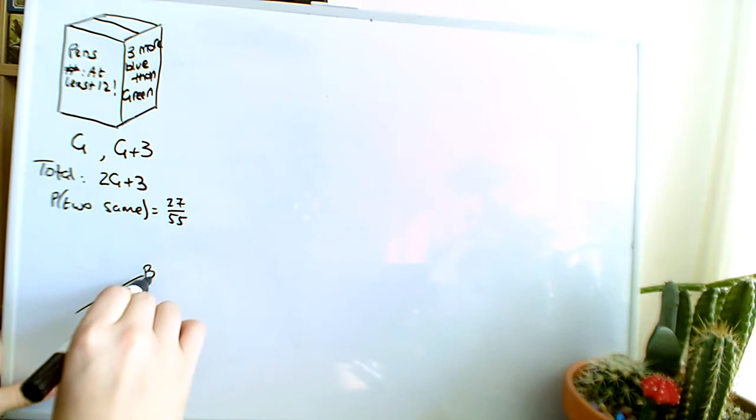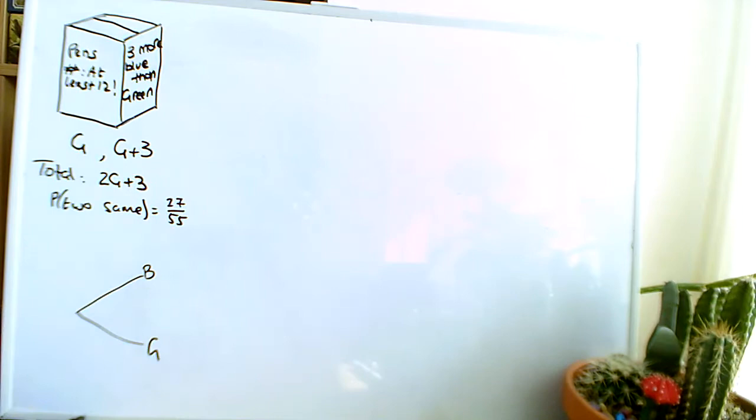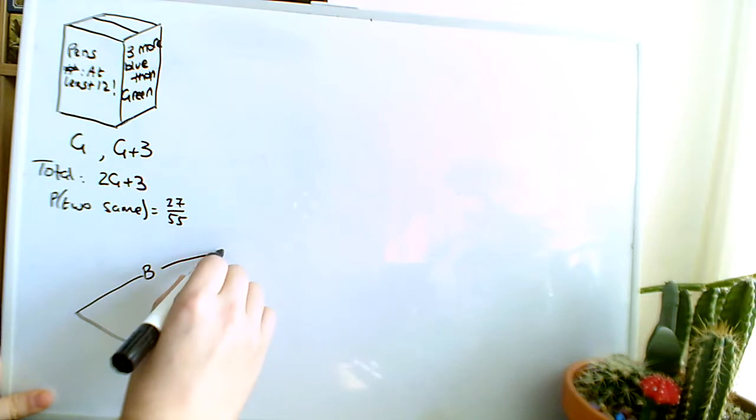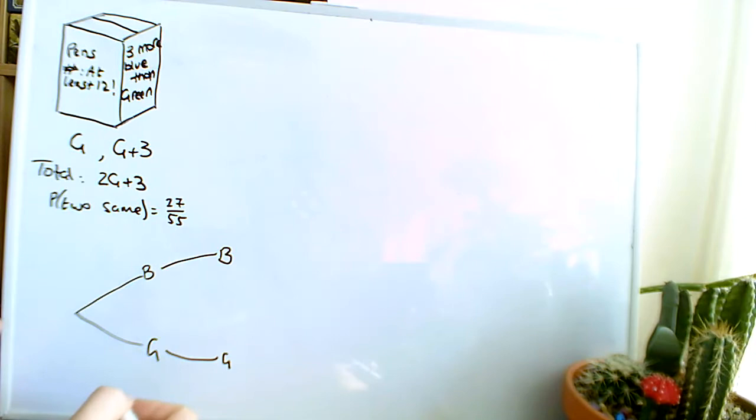blue, second pick, green. There's no point in drawing the whole tree diagram because we don't need everything. We're just going to pick a blue again here, and a green here.